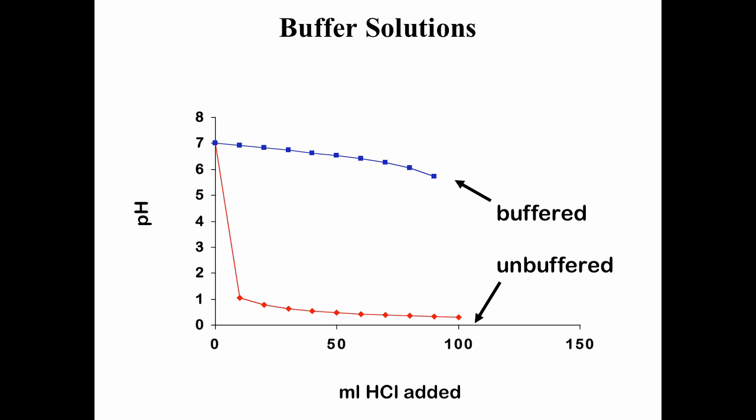For pure water, the pH drops dramatically from just under 7 down to 1. For the buffer solution, we see a gradual decrease — most of the added hydrogen ion is being consumed. The buffer system maintains a relatively constant pH — not exactly constant, but relatively constant.